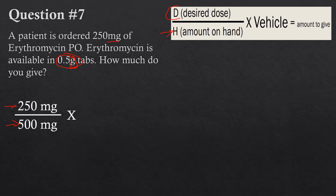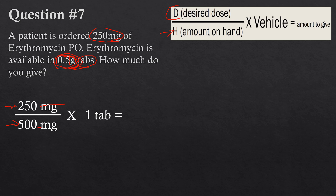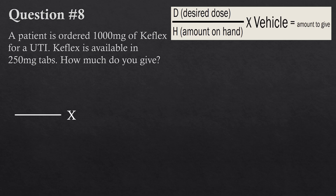We convert 0.5 grams to the same unit as the desired dose — milligrams — giving us 500 milligrams for H. It's much easier to work with larger numbers like 250. The vehicle is one tab, since each tab contains 0.5 grams or 500 milligrams. Solving: 250 divided by 500 — milligrams cancel — gives 0.5. Multiplied by one tab gives 0.5 tabs.